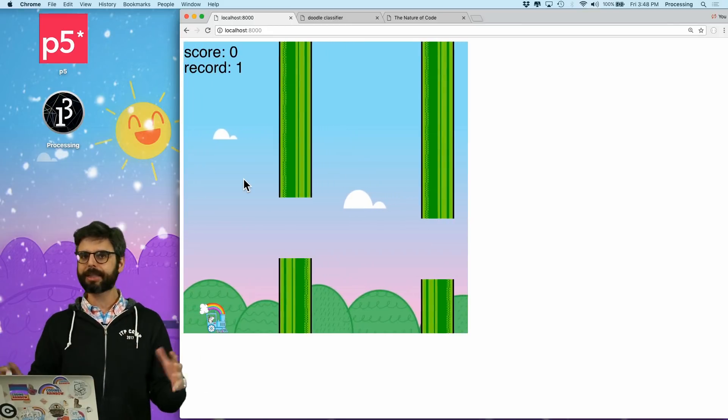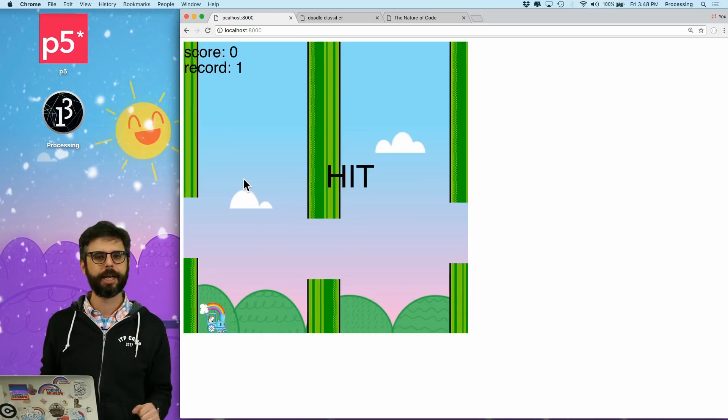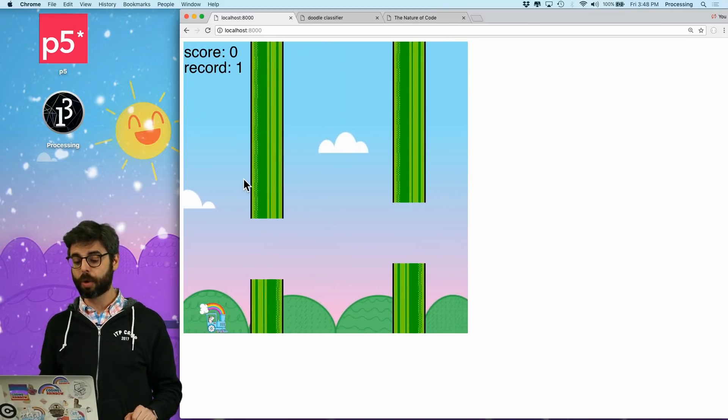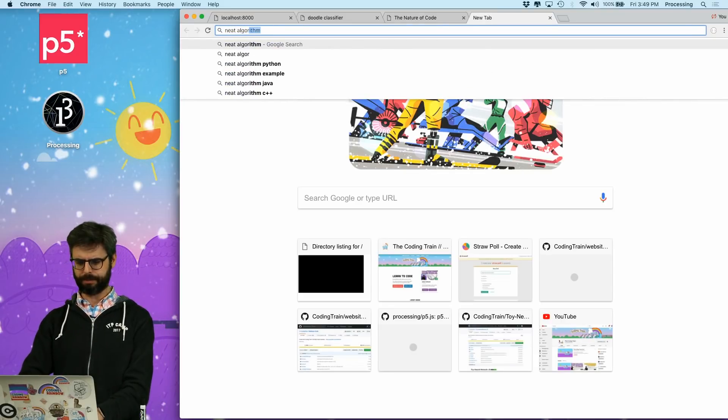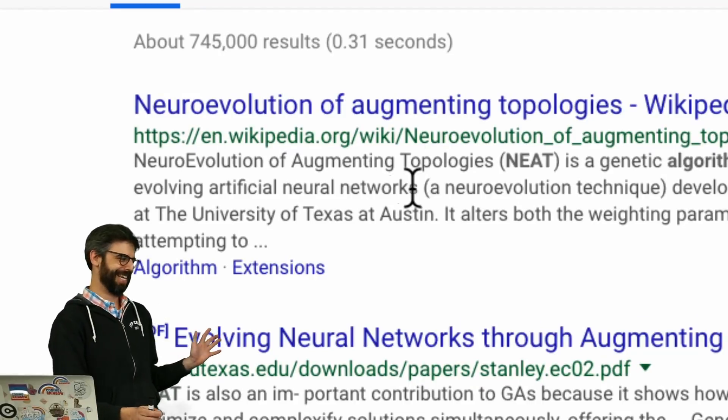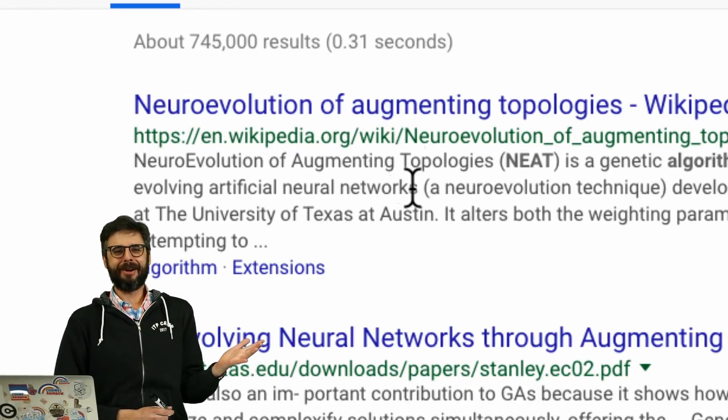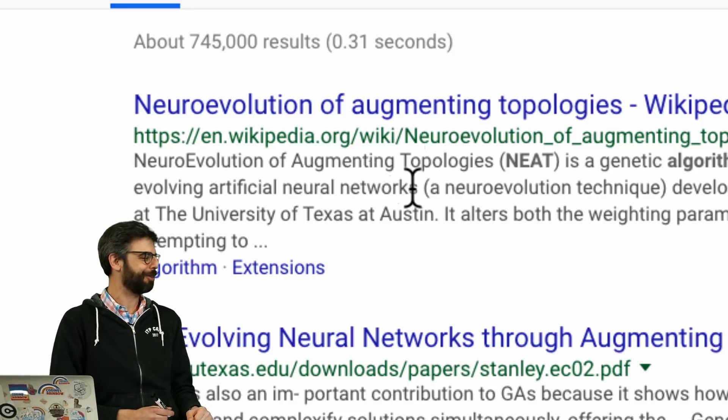That's going to be the goal of this series, and then I have other ideas for other types of neuroevolution tutorials. I believe this is also referred to as the NEAT algorithm because it's neat—Neuroevolution of Augmenting Topologies. That sounds so much smarter.